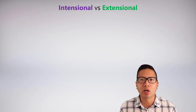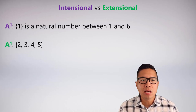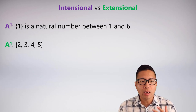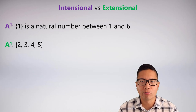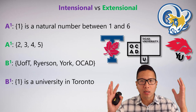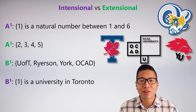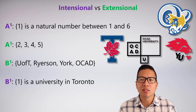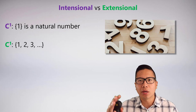Let's compare some pros and cons of intentional and extensional interpretations. I can define a predicate intentionally and extensionally and capture the same meaning. For example, 'A is a natural number between 1 and 6' intentionally corresponds to the set {2, 3, 4, 5} extensionally. Going the other direction, the set {U of T, Ryerson, York, OCAD} extensionally captures 'is a university in Toronto' intentionally.